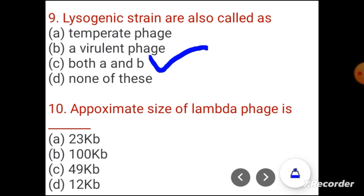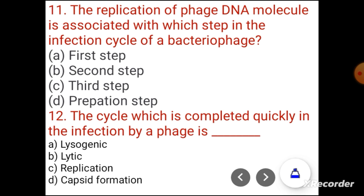Question 10. Approximate size of lambda phage: 23 KB, 100 KB, 49 KB, or 12 KB. The correct answer is 49 KB.